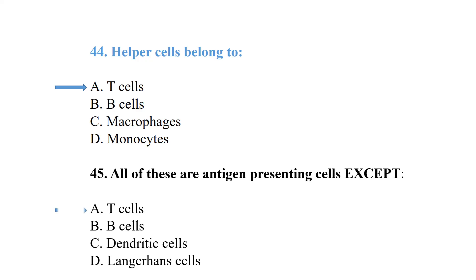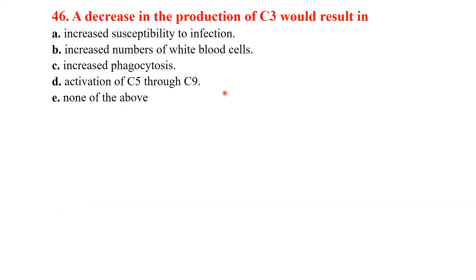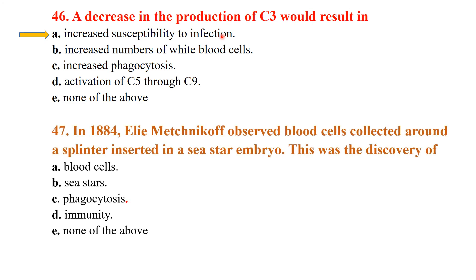All of the following are antigen-presenting cells except T cells — T cells are not antigen-presenting cells. A decrease in the production of C3 would result in increased susceptibility to infection.